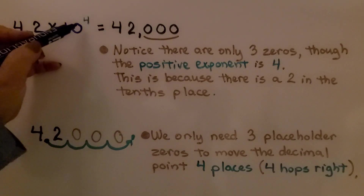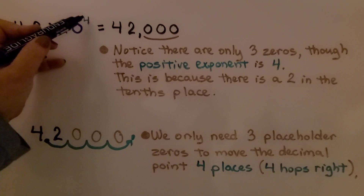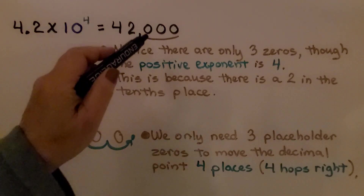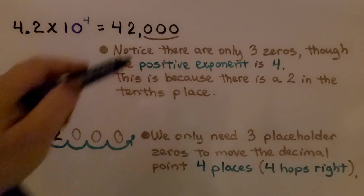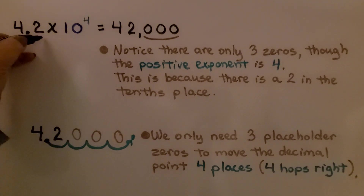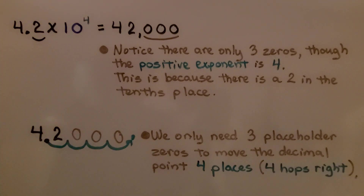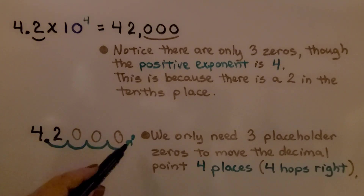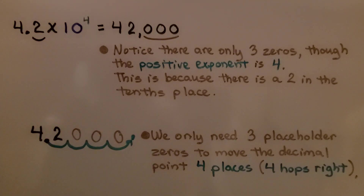This 10 is raised to the fourth power. Do you notice there are only three zeros, though the positive exponent is 4? This is because there is a 2 in the tenths place. We only need three placeholder zeros to move the decimal point 4 hops to the right.